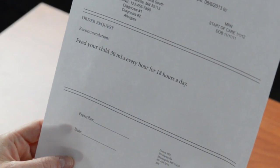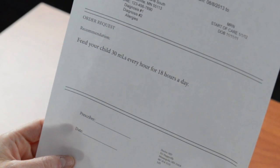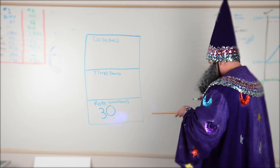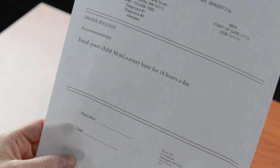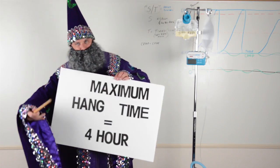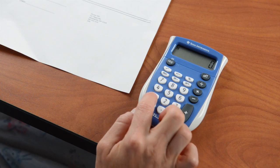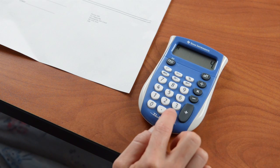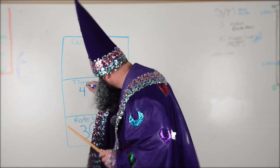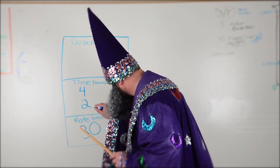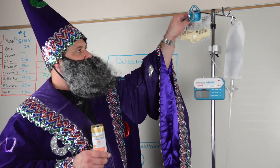The doctor says to feed your child 30 milliliters every hour for 18 hours a day. 30 milliliters every hour is the rate. 18 hours is the length of time the child continuously receives food every day. Because four hours is the maximum hang time, you must divide the 18 hours of continuous feeding the doctor wants by four hours. This works out to four four-hour feedings and one two-hour feeding, meaning you put food into the feeding bag five times.